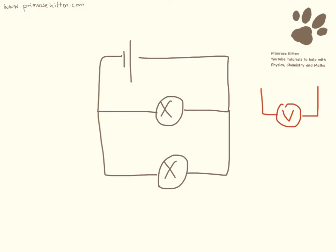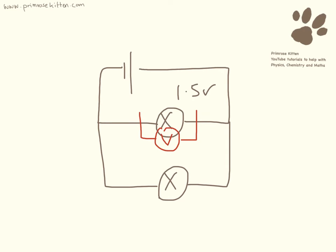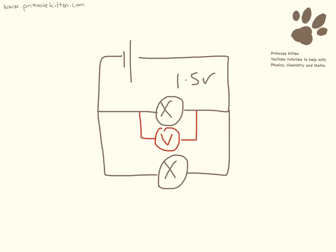One of the most important things to remember about a parallel circuit is that when we take voltmeter readings, if we took a voltmeter reading across there and it was 1.5 volts, if we then moved the voltmeter and took the reading across there, it would also be 1.5 volts.